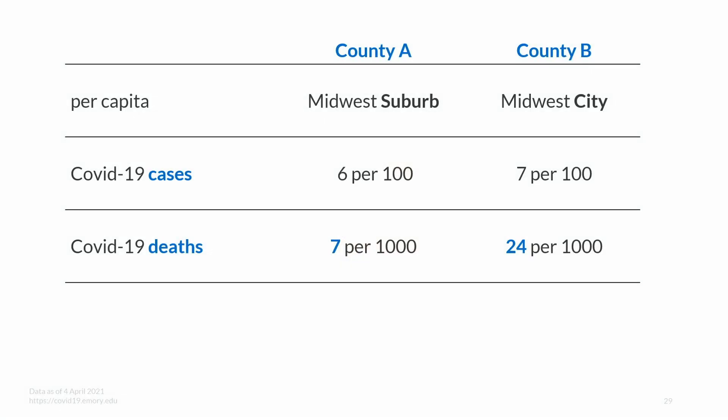How are we letting this happen in the richest, most technologically advanced country in the world? I believe some of the answer lies in a tale of two counties. County A is a suburb and County B is a neighboring city in the Midwest. Both have similar age and sex breakdowns, and in the past year, both counties recorded similar numbers of COVID-19 cases per capita. But County B has a death rate from COVID-19 that is three times as high as the death rate in County A.